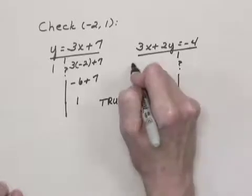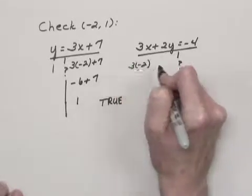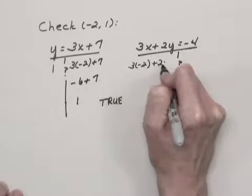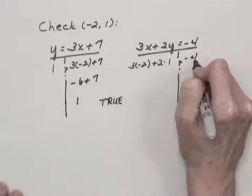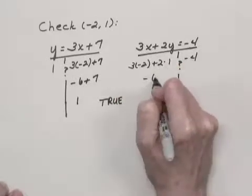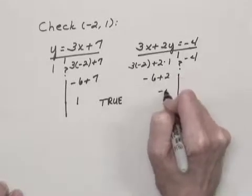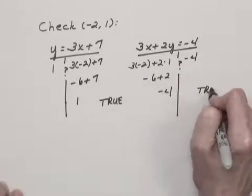In the second equation, I have 3 times negative 2 plus 2 times 1. And I'm asking if that's equal to negative 4. I have negative 6 plus 2, or negative 4. So I do have a true statement.